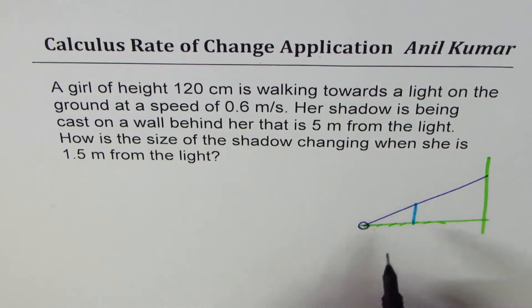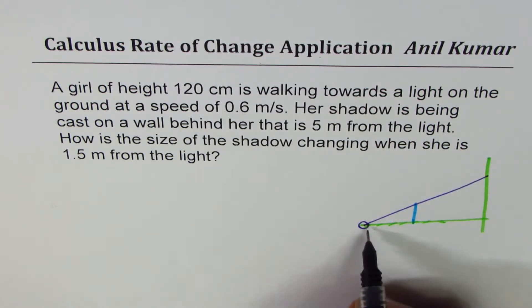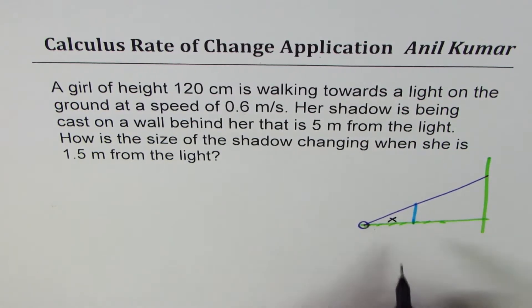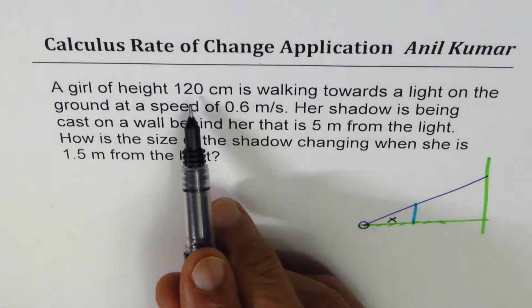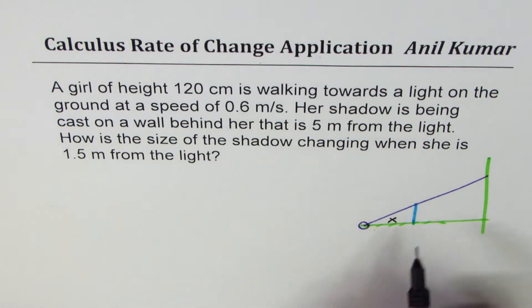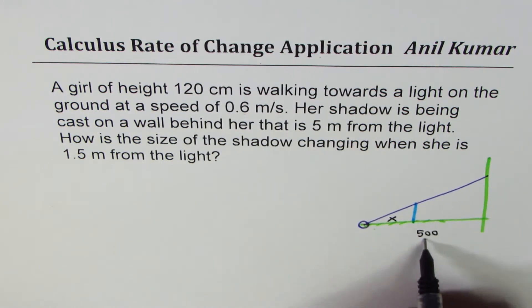And let us say that the girl whose height is 120 cm is right there. Now she is walking towards the light. So let me call this distance as x. The distance given from the source of light to the wall is 5 m. Since we can work in centimeters, 5 m could be written as 500 cm. So that becomes the distance from the wall. So all units will be in centimeters.